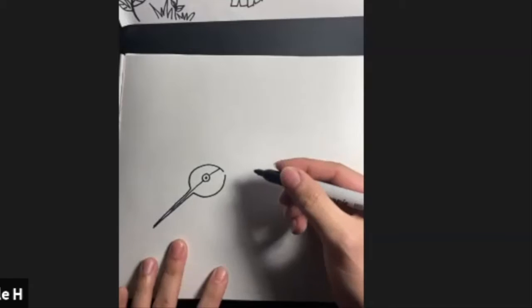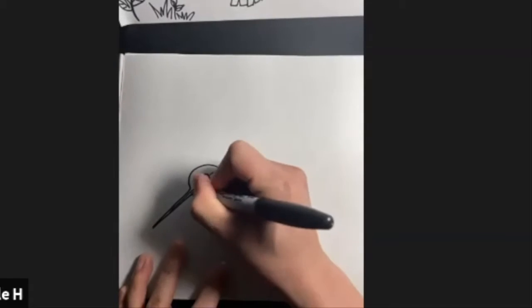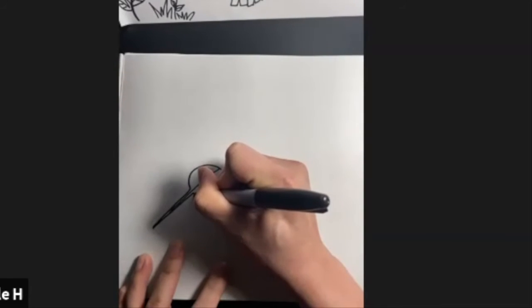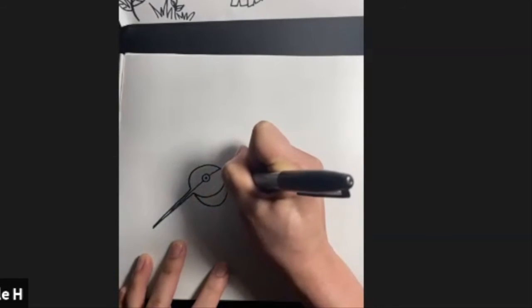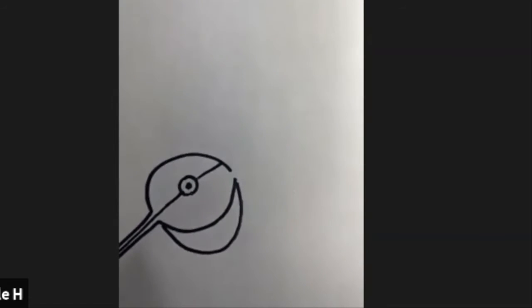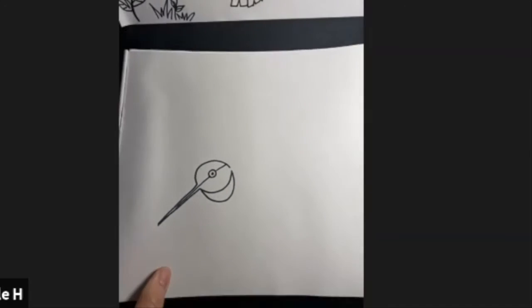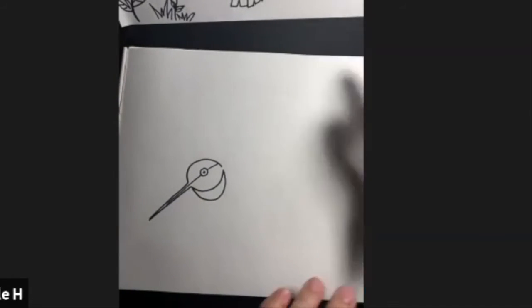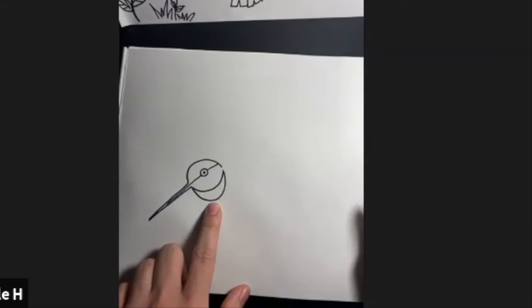Next will be the throat of the hummingbird. His throat, it's kind of like a smiley shape down here. That's going to be the hummingbird's throat. Usually it's red color. Depends on the color of the hummingbird. They have different colors, beautiful colors. So that's going to be the throat of the hummingbird.